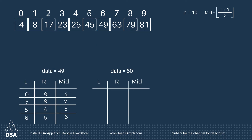Suppose you want to search for data equal to 50. The left variable is 0 and the right variable is 9. So the mid value is 4 — you already know how to find the middle value.